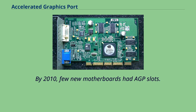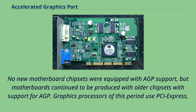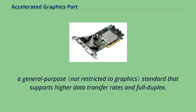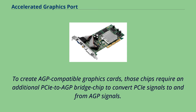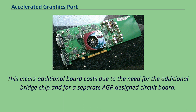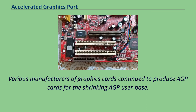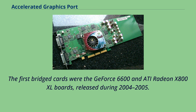By 2010, few new motherboards had AGP slots. No new motherboard chipsets were equipped with AGP support, but motherboards continued to be produced with older chipsets with support for AGP. Graphics processors of this period use PCI Express, a general-purpose standard that supports higher data transfer rates and full duplex. To create AGP-compatible graphics cards, those chips require an additional PCIE-to-AGP bridge chip to convert PCIe signals to and from AGP signals, incurring additional board costs. Various manufacturers of graphics cards continued to produce AGP cards for the shrinking AGP user base. The first bridged cards were the GeForce 6600 and ATI Radeon X800XL boards, released during 2004–2005.